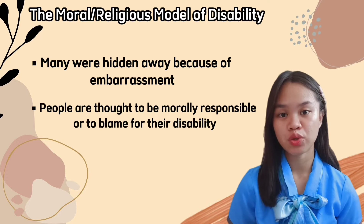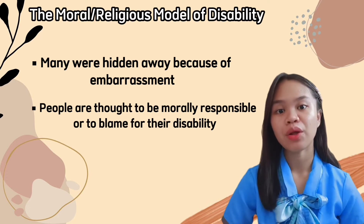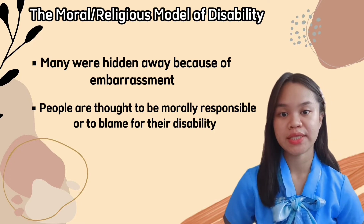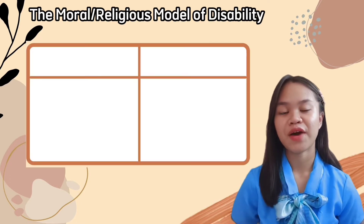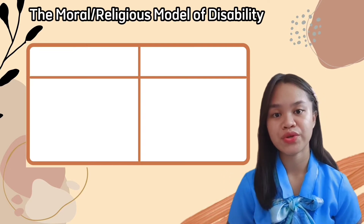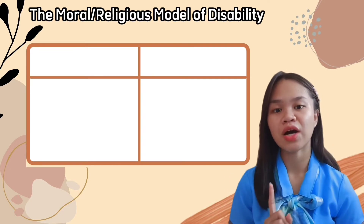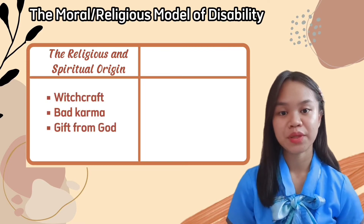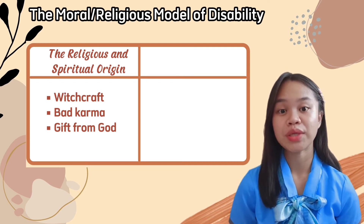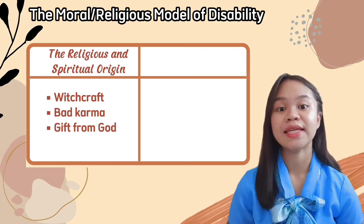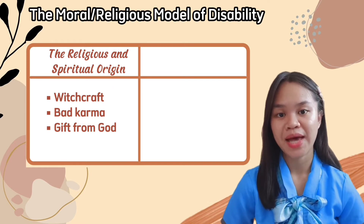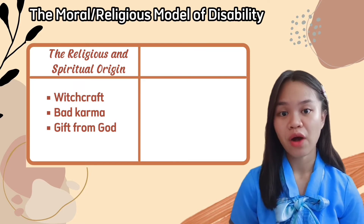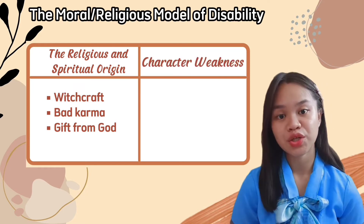As a form of retribution or manifestation of a devil, people are thought morally responsible or blamed for their own disability. This model can be classified into two parts. The first part is under the religious and spiritual origin: it is believed that disability comes from being cursed by a witch or witchcraft, or is bad karma, or something evil in the past. However, disability is also believed to be a gift of God.